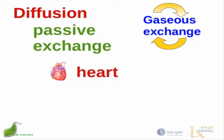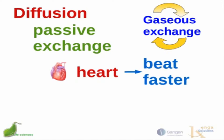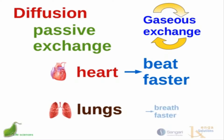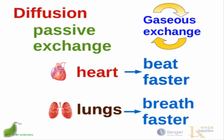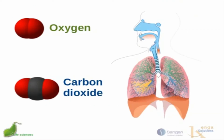As a consequence of diffusion being passive, there are only two things we can do to increase the amount of oxygen that gets into our blood or the rate at which we get rid of carbon dioxide. One is to make the heart beat faster, so blood flows to the lungs more quickly and gaseous exchange happens more rapidly. The second is to breathe faster, which also speeds up the exchange of gases. When both happen together, we can get more oxygen in and more carbon dioxide out more quickly.